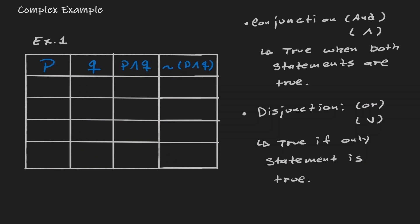So let's use these ideas and see how we can define them within this example. We're going to start by looking at the columns for P and Q and listing the different combinations: both true, both false, first one true and second one false, and first one false and second one true.